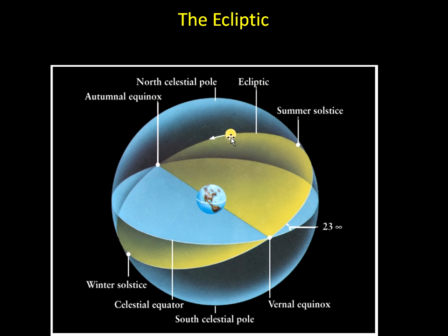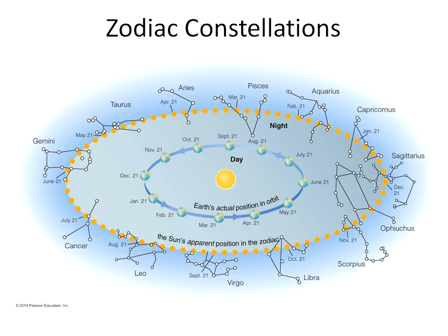So this is a very quick treatment of the ecliptic. It's a very abstract concept — you have to think about it and try to piece this together. It helps to just imagine what the sun looks like as the Earth is orbiting around it. Once you have the idea of the ecliptic, you can think about the constellations which line up with the ecliptic.